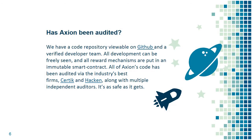Has Axion been audited? We have a code repository viewable on GitHub and a verified developer team. All development can be freely seen, and all reward mechanisms are put in an immutable smart contract. All of Axion's code has been audited via the industry's best firms — Certique and Hacken — along with multiple independent auditors. It's as safe as it gets.